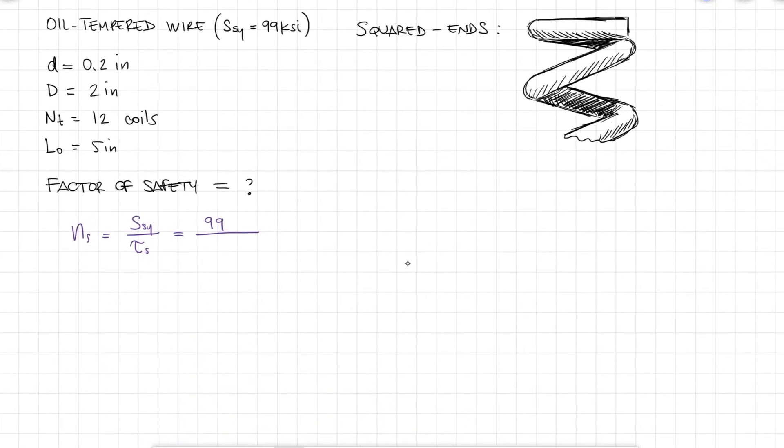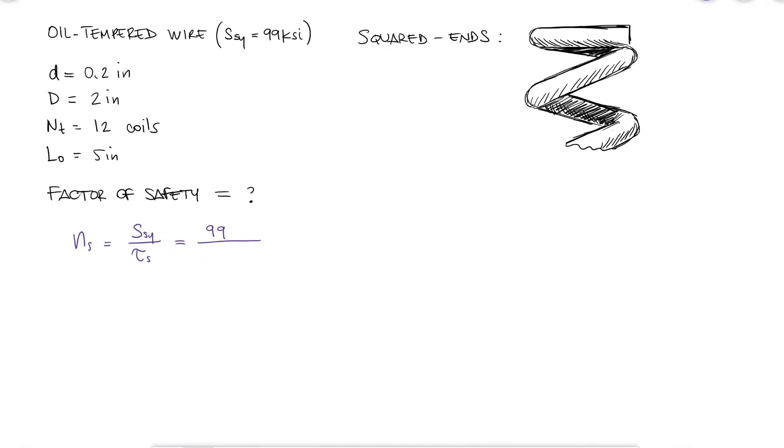We have the shearing yield strength, and we know that the shearing stress will be given by that expression we derived during the main video. Again I'm using the S subscript because the maximum shearing stress will occur when the external compressive load F is maximum and equal to the load required to bring the spring to its solid length.